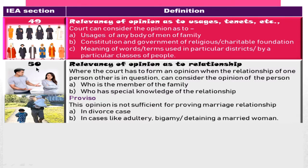Section 50 IEA is about the relevancy of opinion as to relationship. When a question of relationship is raised — for example, whether a particular person is the father of a child — the opinion of a person who has knowledge in the relationship, like a family member or a family doctor, is considered. However, the exception is that in cases of marriage relationship such as divorce, adultery, bigamy, or detaining a married woman, this opinion alone is not sufficient.